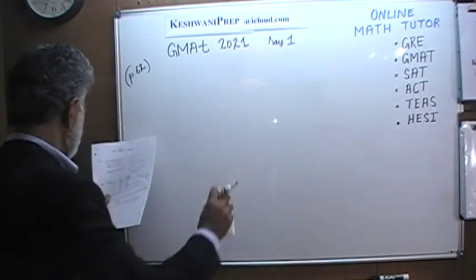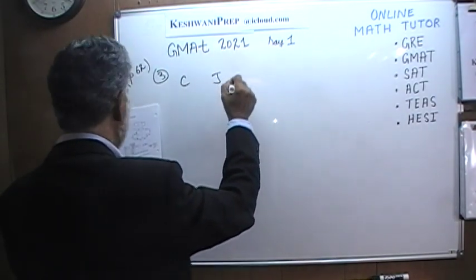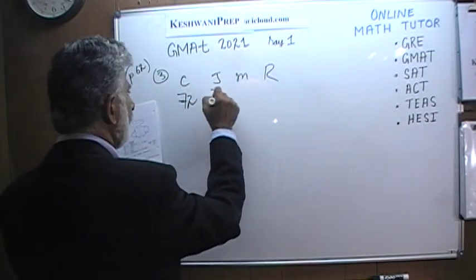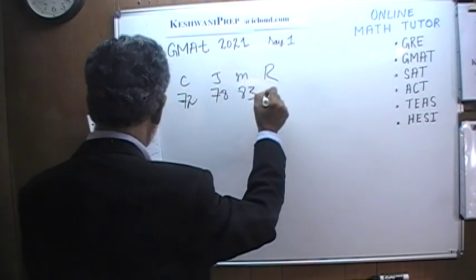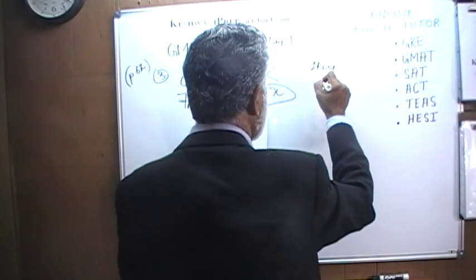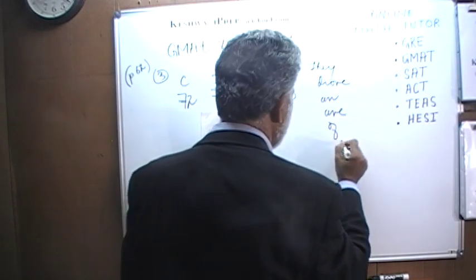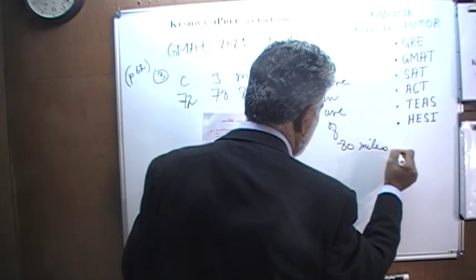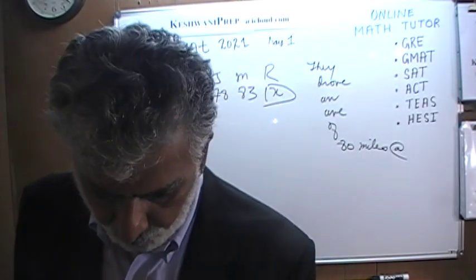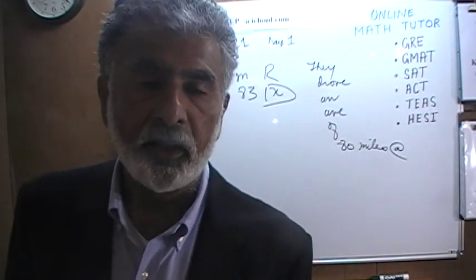Number three: we are told that four people — C, J, M, and R — drove some miles. C drove 72 miles, J drove 78 miles, M drove 83 miles, and R drove an unknown number of miles. We are told they drove an average of 80 miles each. The question is: how many miles must R have driven?